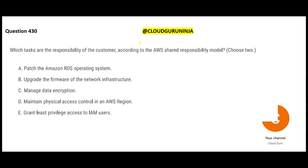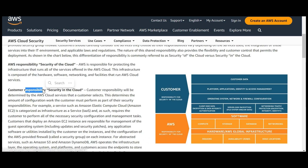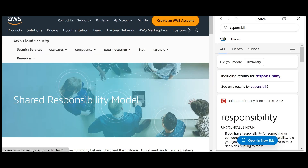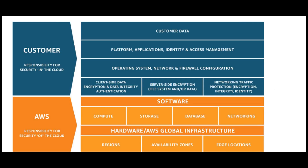Let us jump and look at these questions. We all know there is a shared responsibility model that AWS promotes - some responsibilities you own as a customer and some are taken care of by AWS. This is a fantastic diagram; you can pause this video and read it carefully. The blue items are your responsibilities and the orange or amber ones are AWS responsibilities.